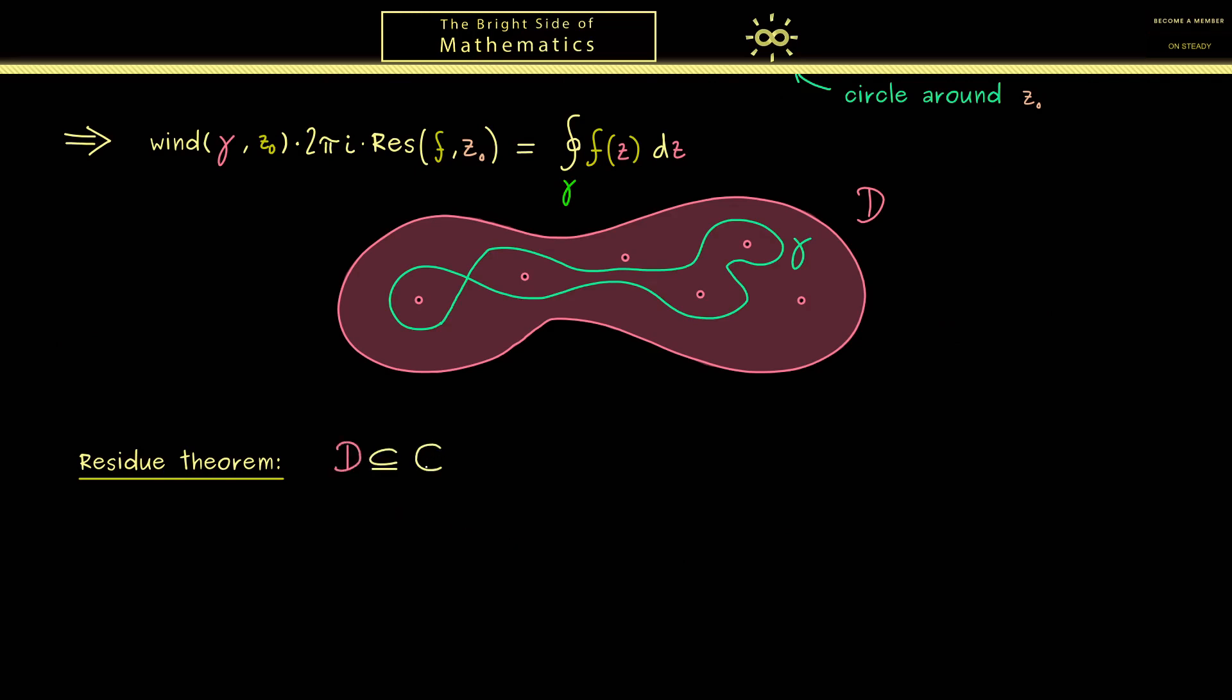First of all D is again an open domain in C. And there please don't forget it means it's connected. And moreover of course as before we take a holomorphic function f defined on D. And also again this function now should have finitely many singularities and we call them z1, z2 and so on. So you can imagine this like in the picture before where we now enumerate all the isolated singularities.